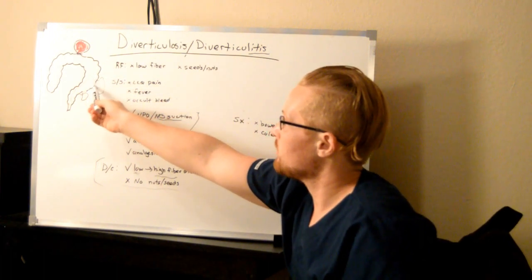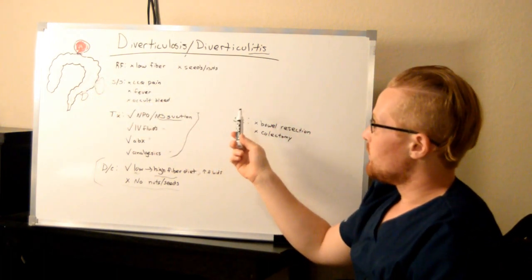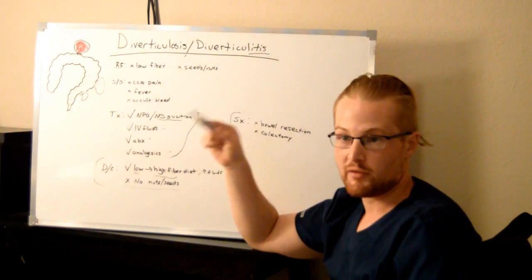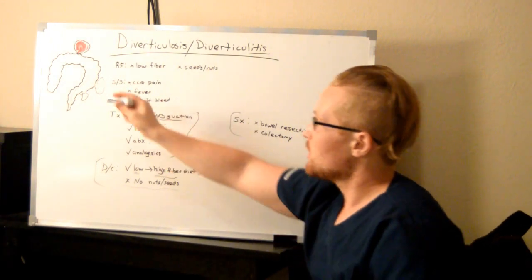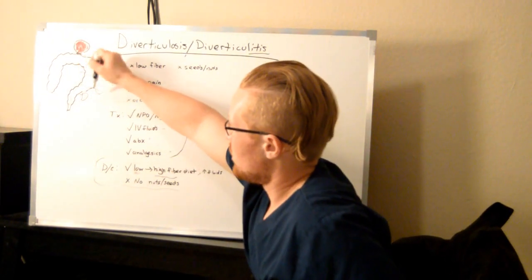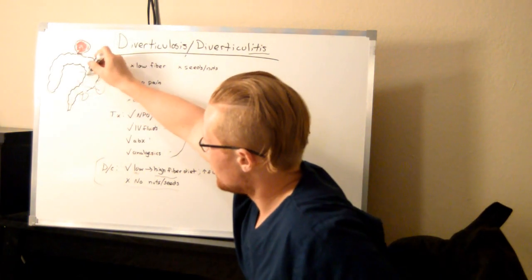If that doesn't work, they may need surgery if it's severe enough, in which case they'll either cut out the section of the colon that is bad and just reconnect here—that's called a bowel resection.